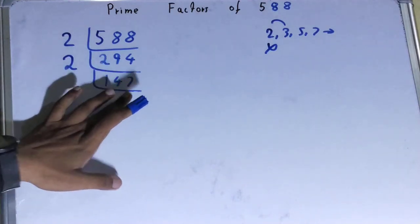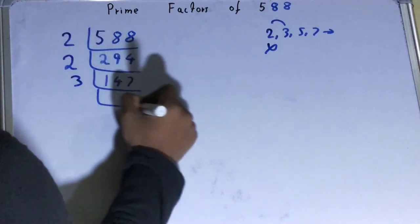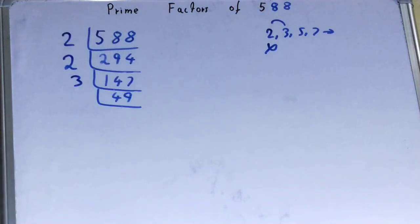3 fours are 12. 2, 7. Yes it is divisible by 3. So divide it. 3 fours are 12. 3 nines are 27. Right.